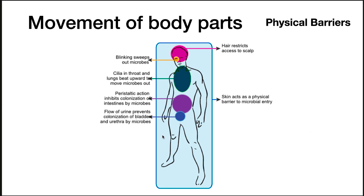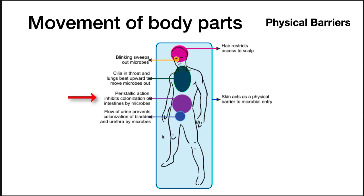Another physical barrier is the movement of body parts. Humans can move, and this movement can act as an antimicrobial agent. Examples include blinking, which sweeps microbes out of the eye; cilia in the throat and lungs that constantly beat upward and move microbes out; the peristaltic action of the GI tract, which pushes microbes through; and the flow of urine, which washes microbes from the urethra.